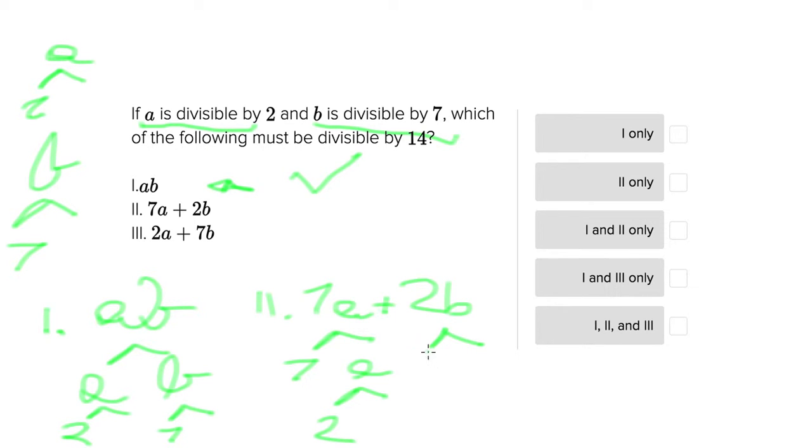And then 2b here, we would have 2 and b, and then b has 7 as a factor. So again here we have 14. So 2b itself would be divisible by 14. Now the question to ask here is whether adding 7a and 2b produces a number that's still divisible by 14.